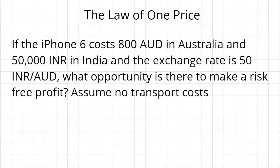Now, why does the law of one price exist? Why is there this insistence that things should cost the same amount absolutely everywhere? It's based on this idea of what's called arbitrage opportunities, or the opportunity to make a perfect risk-free profit. So imagine that the iPhone 6 costs $800 in Australia and 50,000 rupees in India, and the exchange rate is 50 rupees per Australian dollar.